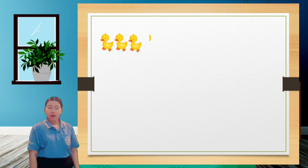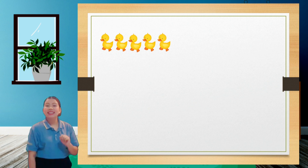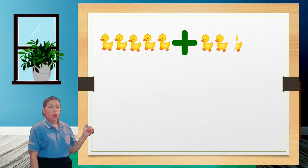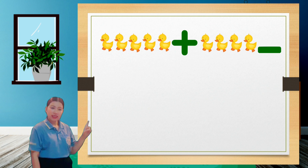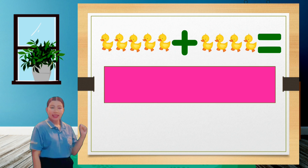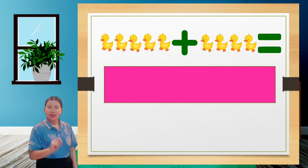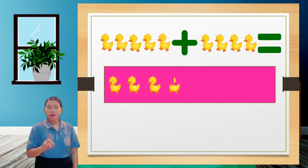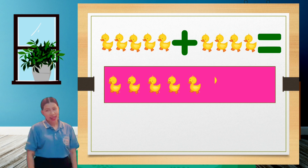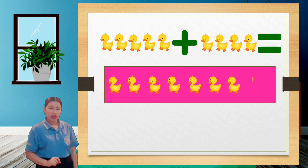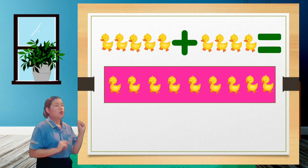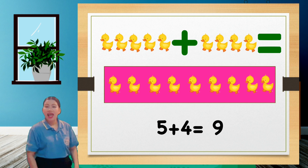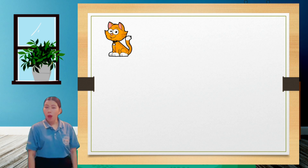Next we have here ducklings: one, two, three, four, five ducklings plus four more ducklings. What is the answer? Five plus four equals nine. Please repeat after me: five plus four equals nine.